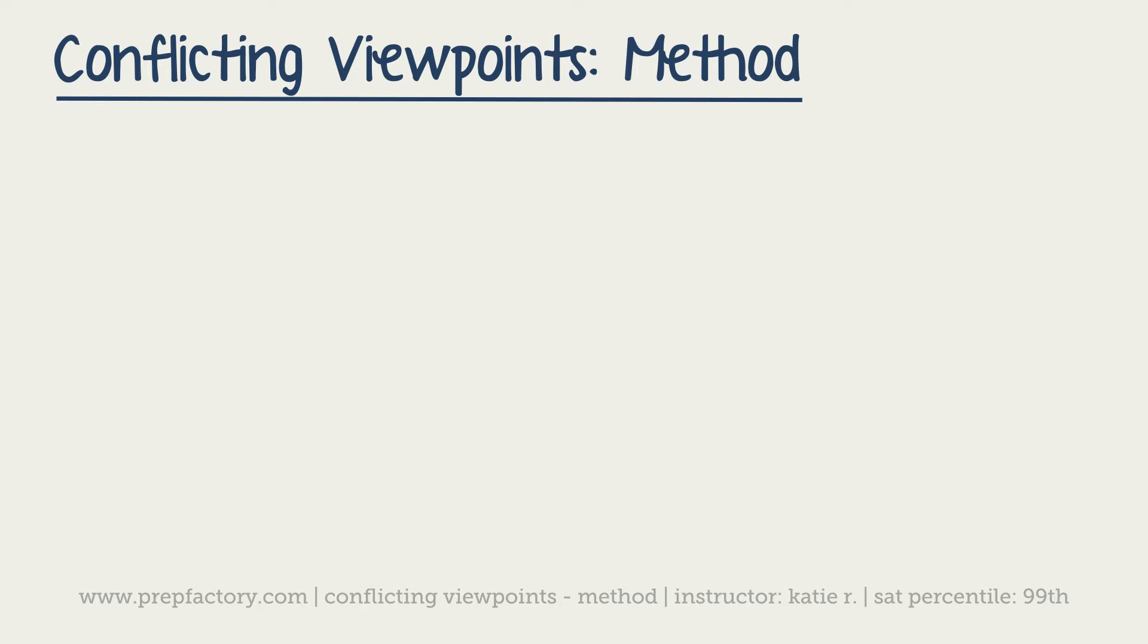Okay, so conflicting viewpoints, like I said, you have intro of some sort, you have person one, so they're generally going to be scientists, researcher, et cetera. So you have person one, and then you have person two. However many paragraphs each one of these little three categories entails, they're always going to be in that order, unless the intro doesn't exist, which very occasionally will happen.